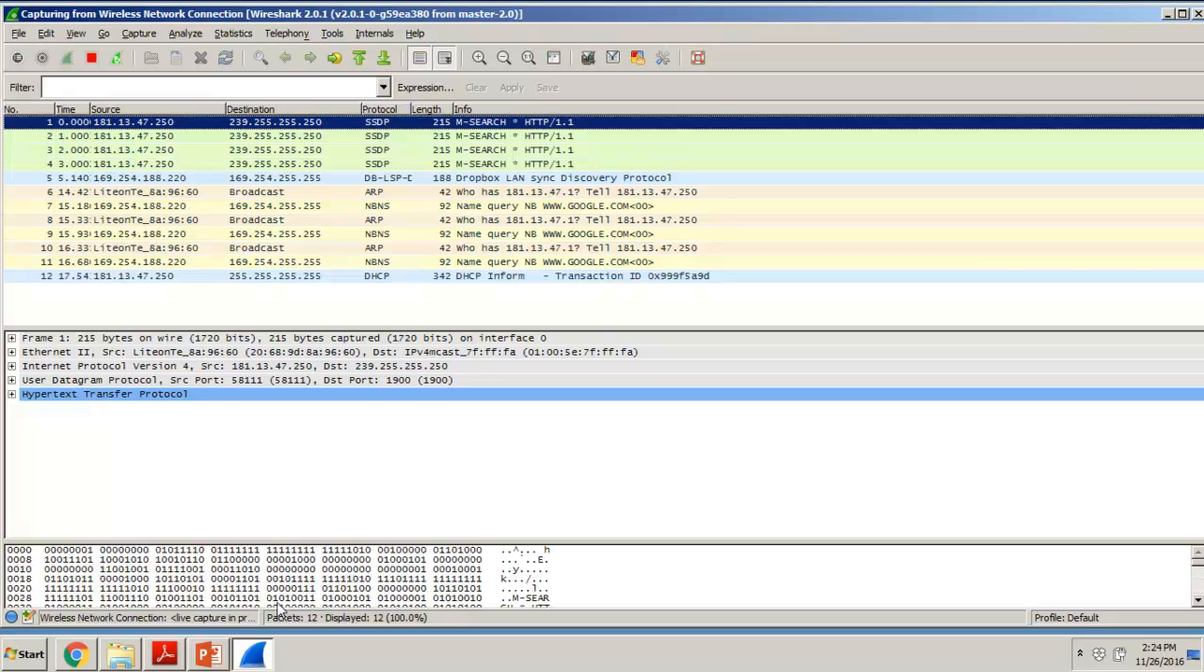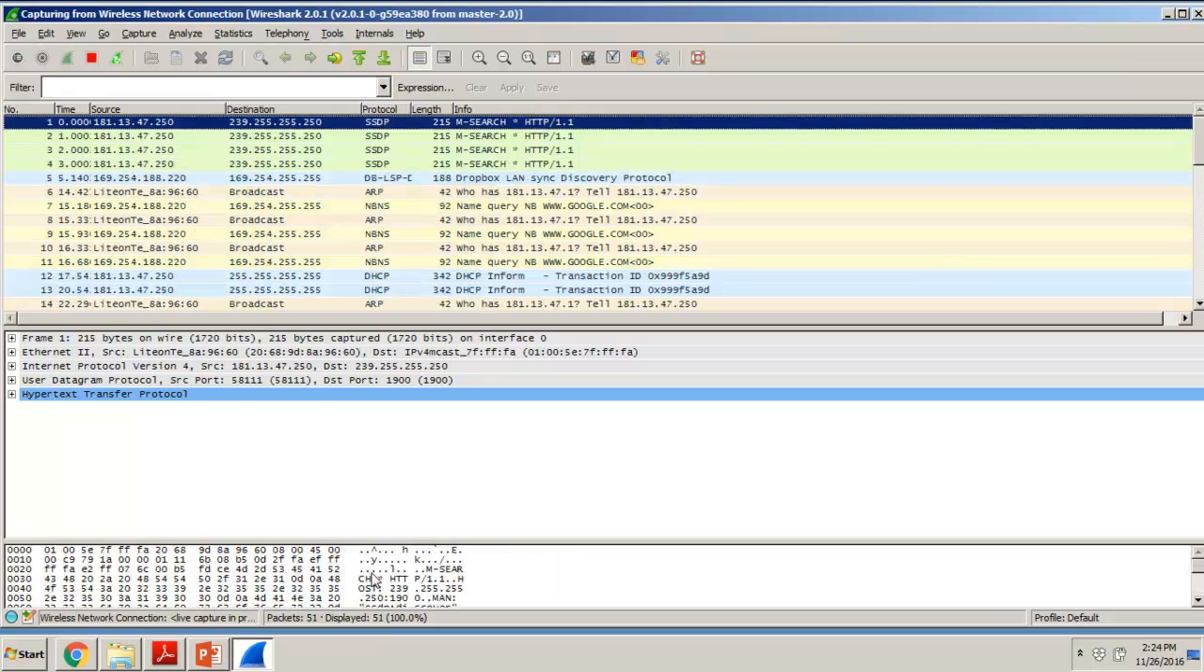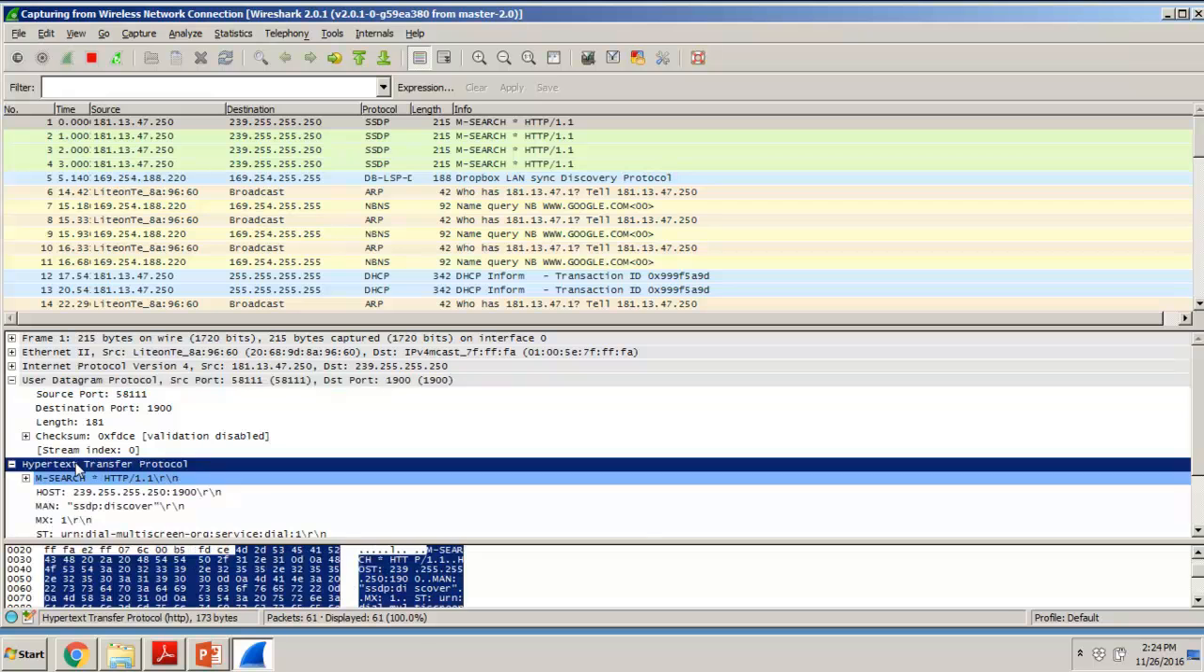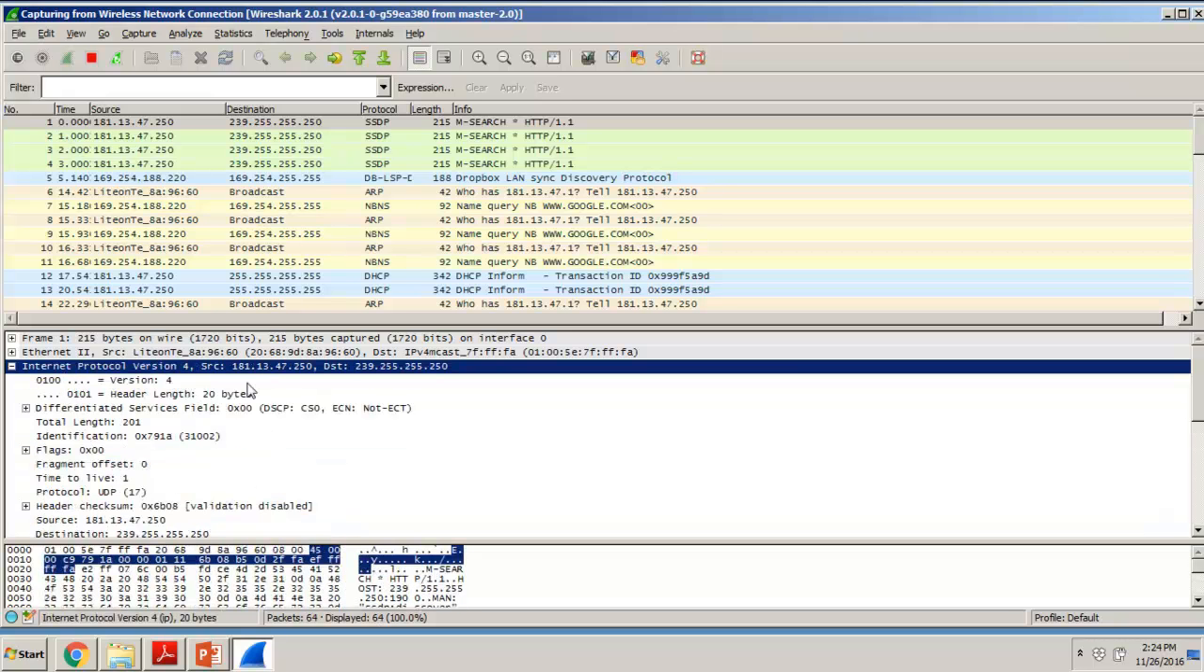This is what I was talking about. Wireshark gives us two options: something which is understood by the router or switch—you can see zeros and ones—we can convert it into hexadecimal, and then we have something which is human-readable, like Internet Protocol version 4, header length. All the zeros and ones have a meaning which we might cover in future videos. That was all for today. Thanks and have a nice day.